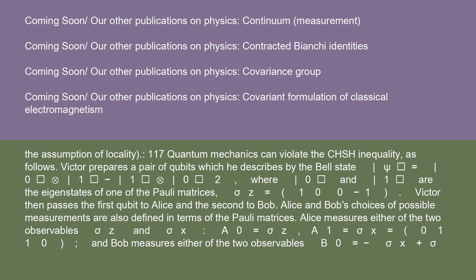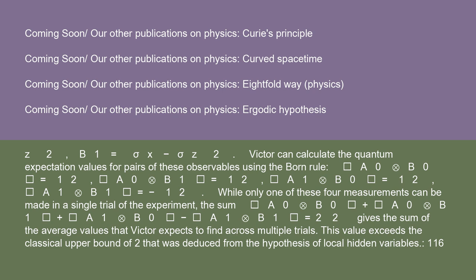Victor prepares a pair of qubits described by the Bell state ψ = (|01⟩ − |10⟩)/√2, where |0⟩ and |1⟩ are the eigenstates of the Pauli matrix σz = [[1,0],[0,−1]]. Victor then passes the first qubit to Alice and the second to Bob. Alice and Bob's choices of possible measurements are defined in terms of the Pauli matrices. Alice measures either σz or σx: A0 = σz, A1 = σx = [[0,1],[1,0]]. Bob measures either B0 = (−σx + σz)/√2 or B1 = (σx − σz)/√2.